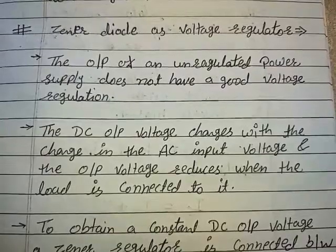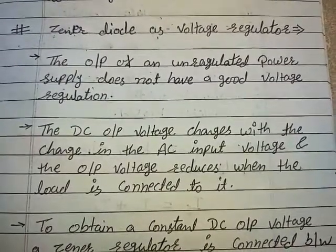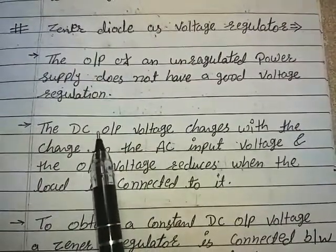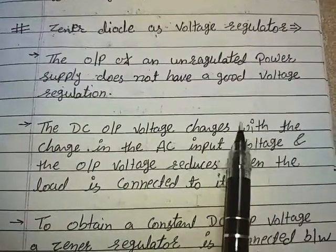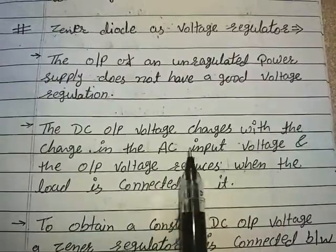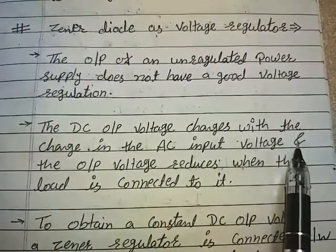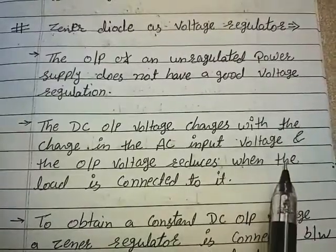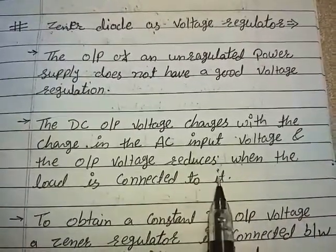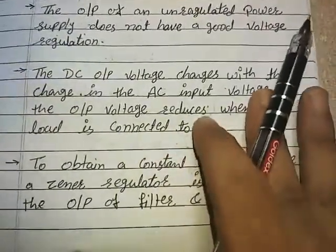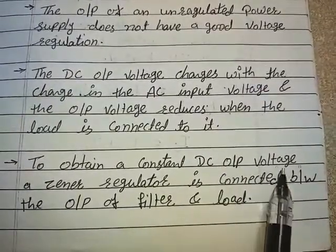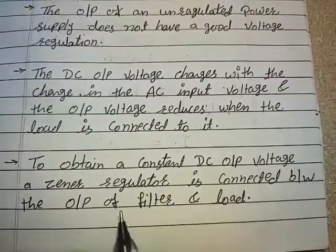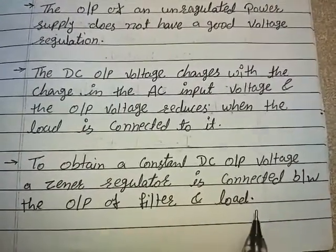As we know, the output of an unregulated power supply does not have good voltage regulation. The DC output voltage changes with the change in the AC input voltage, and the output voltage reduces when the load is connected to it. To obtain a constant DC output voltage, a zener regulator is connected between the output of the filter and the load.